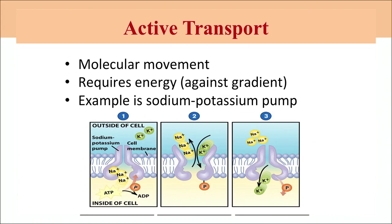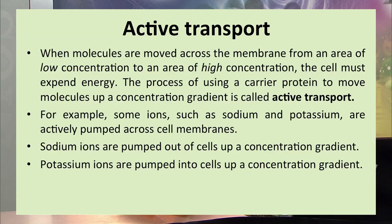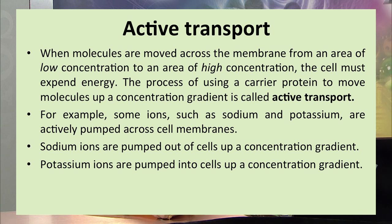The next type of movement is active transport. Active transport requires energy because molecules move from low concentration to higher concentration — against the gradient. The process of using a carrier protein to move molecules up a concentration gradient is called active transport. An example is the sodium-potassium pump: sodium ions are pumped out of the cell up a concentration gradient, and potassium ions are pumped into the cell up a concentration gradient.